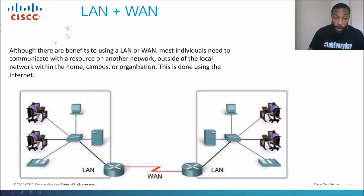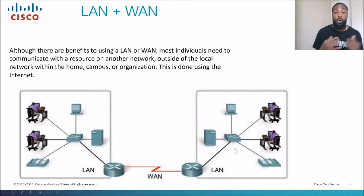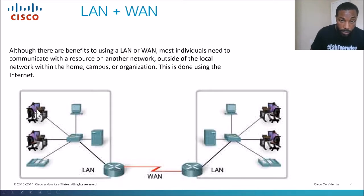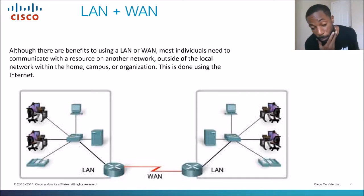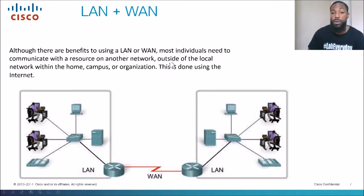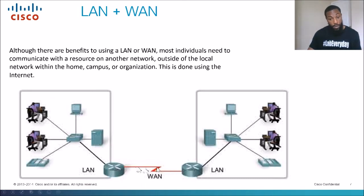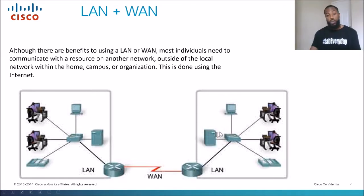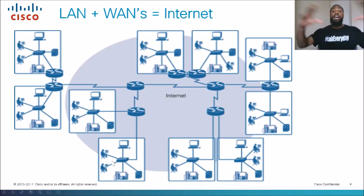Now we take these two concepts together — we've got our LAN and our WAN, which will take us to another LAN. Most individuals need to communicate with resources on another network. You are on your local area network and you need to, say, watch a video stream on YouTube. Most individuals need to communicate with resources outside of the local area network — within the home, campus, or organization — and this is done using the internet. The internet is like the wide area network connected to another wide area network, so on and so forth, until you get to the local area network of the YouTube server.